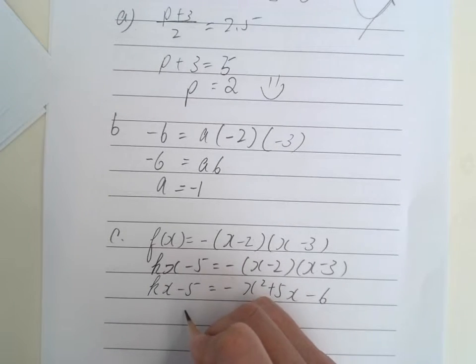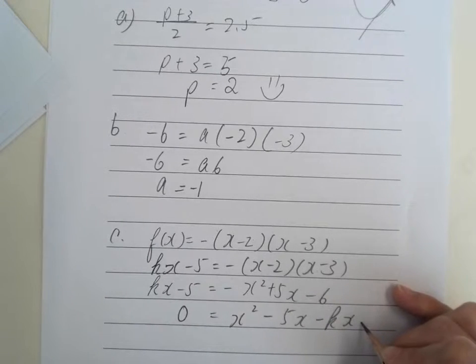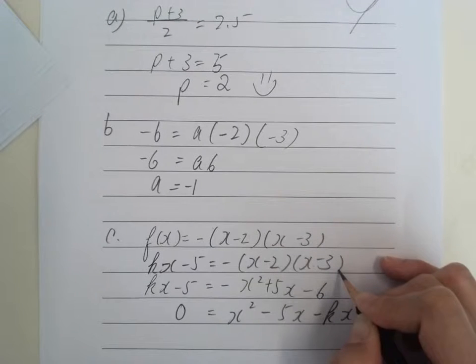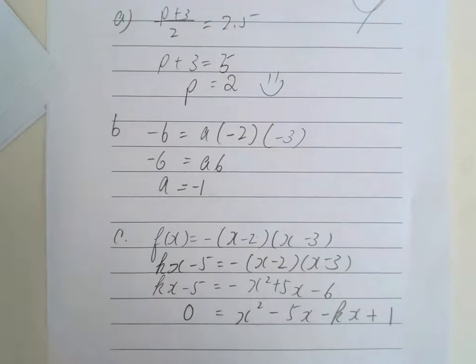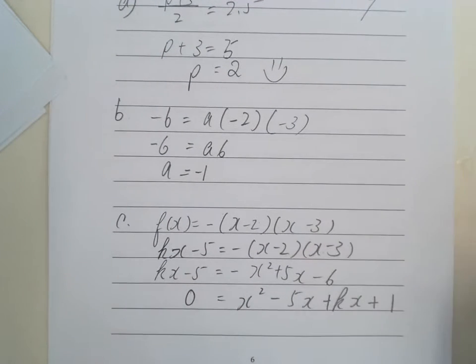So we have x squared minus 5x minus Kx plus 1 equals 0. Alright, so I throw everything on one side to get all the positive things. So this is positive too.